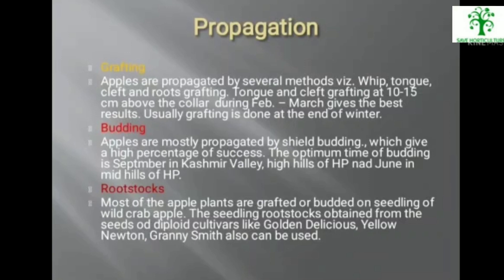Apple is propagated by grafting, budding, and rootstock. For grafting, methods include whip, tongue, cleft, and truce grafting; tongue and cleft grafting at 10–15 cm above the collar during February and March gives the best result. Grafting is usually done at the end of winter. For budding, apples are mostly propagated by shield budding, which gives a high percentage of success. The optimum time for budding is September in the Kashmir valley and high hills of HP, and June in mid hills of HP.